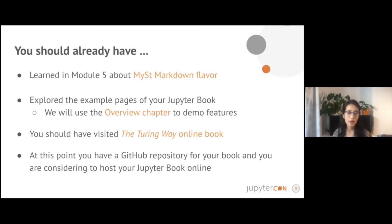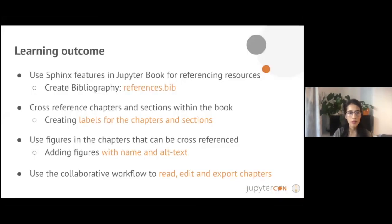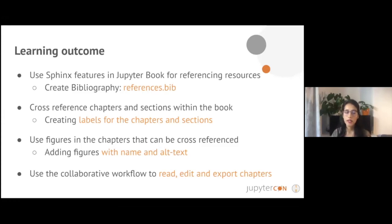At this point you should have a GitHub repository for your book and be considering hosting it online, or have already done so. The learning outcomes of this module are: you will know how to use Sphinx features in JupyterBook for referencing resources. You already have a references.bib file which we will use to create a bibliography on your online book. We will cross-reference chapters and sections within the book using labels, create figures that can be cross-referenced, and show you how to use the collaborative workflow to read, edit, and export chapters from your book to GitHub.